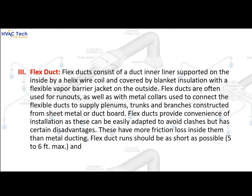Flex ducts consist of a duct inner liner supported on the inside by a helix wire coil, covered by blanket insulation with a flexible vapor barrier jacket on the outside. Flex ducts are often used for runouts, as well as with metal collars to connect flexible ducts to supply plenums, trunks, and branches constructed from sheet metal or duct board. They provide convenience of installation as they can be easily adapted to avoid clashes, but have more friction loss inside them than metal ducting. Flex duct runs should be as short as possible — five to six feet maximum — and should be stretched as tight as possible.